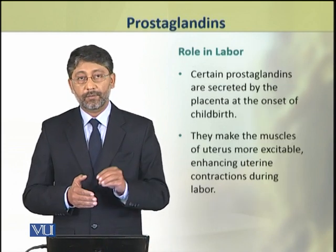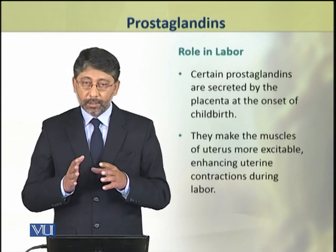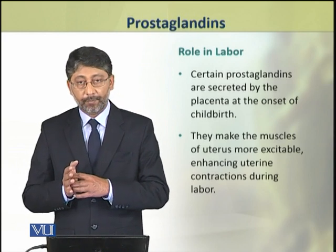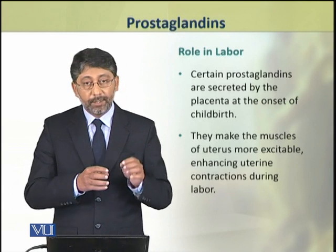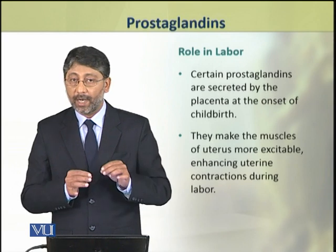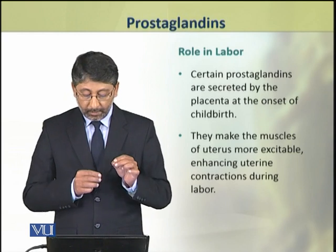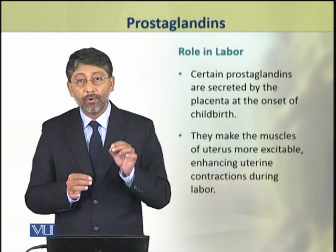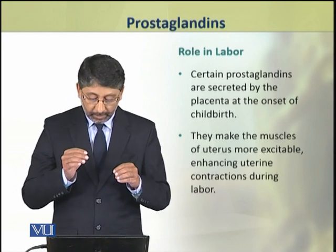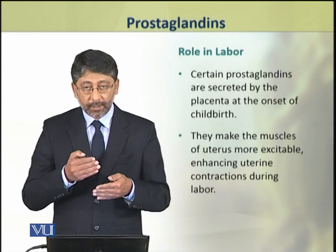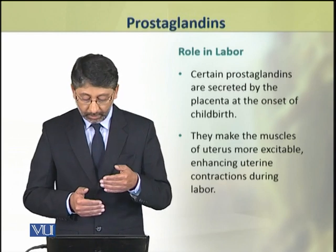Now we shall discuss their role in labour, i.e., child birth. The placenta produces different prostaglandins near the start of child birth. These prostaglandins make the muscles of the uterus more excitable by oxytocin. As a result, the contractions of the uterine wall are enhanced during labour.